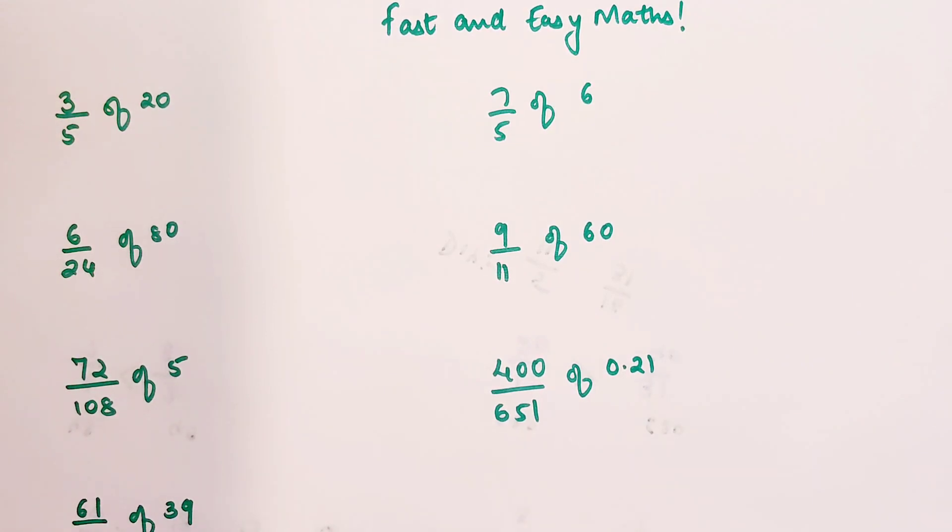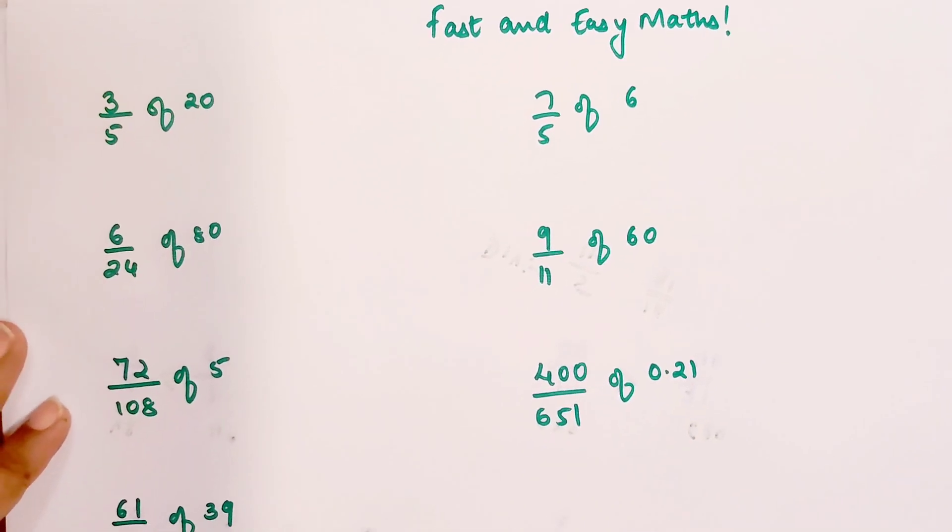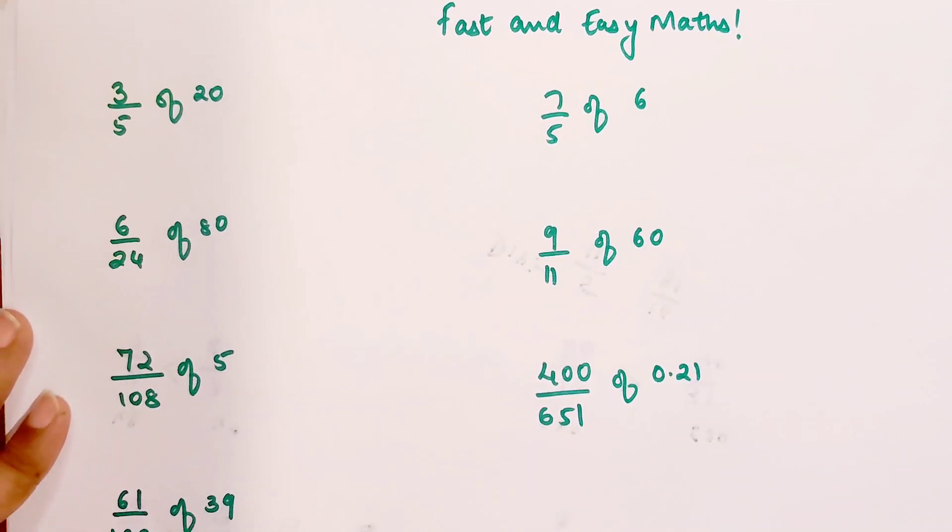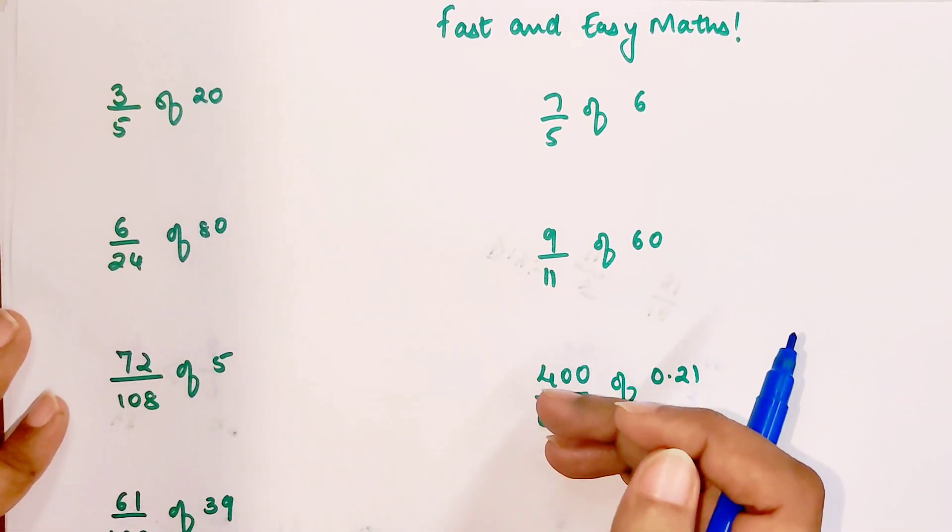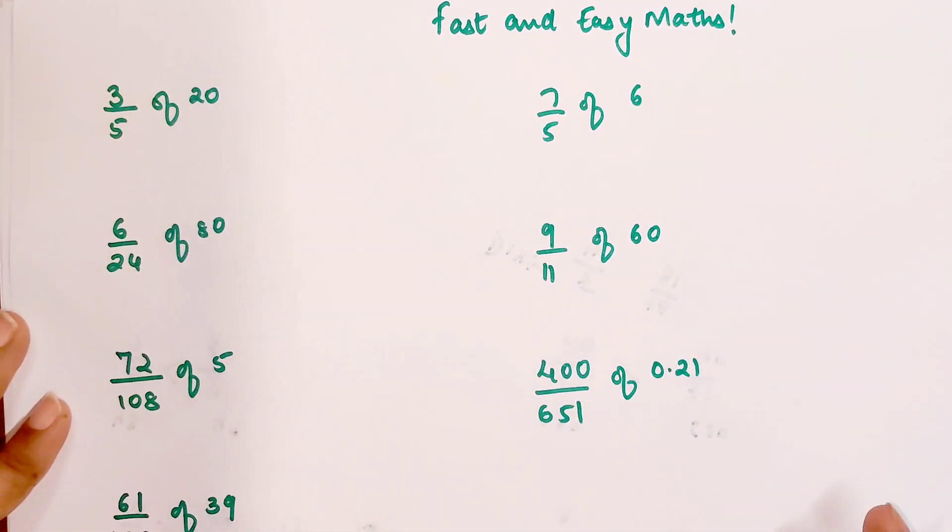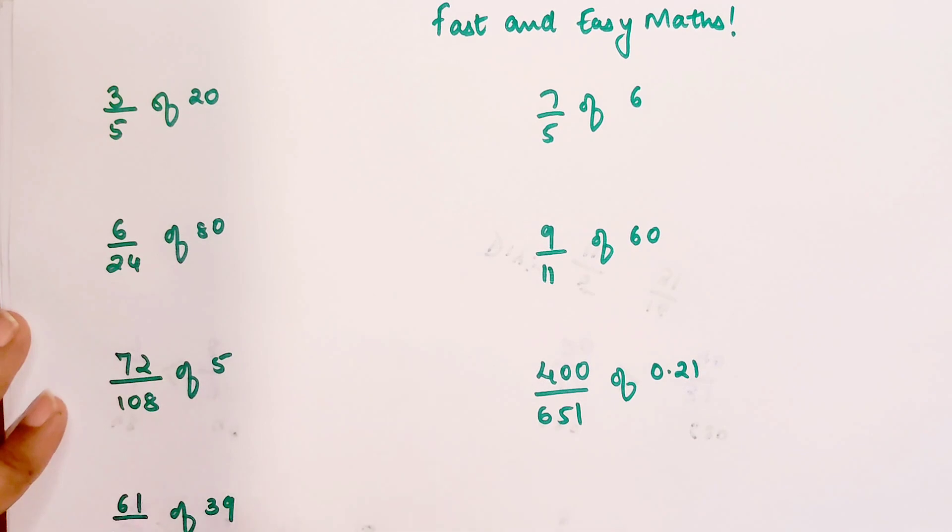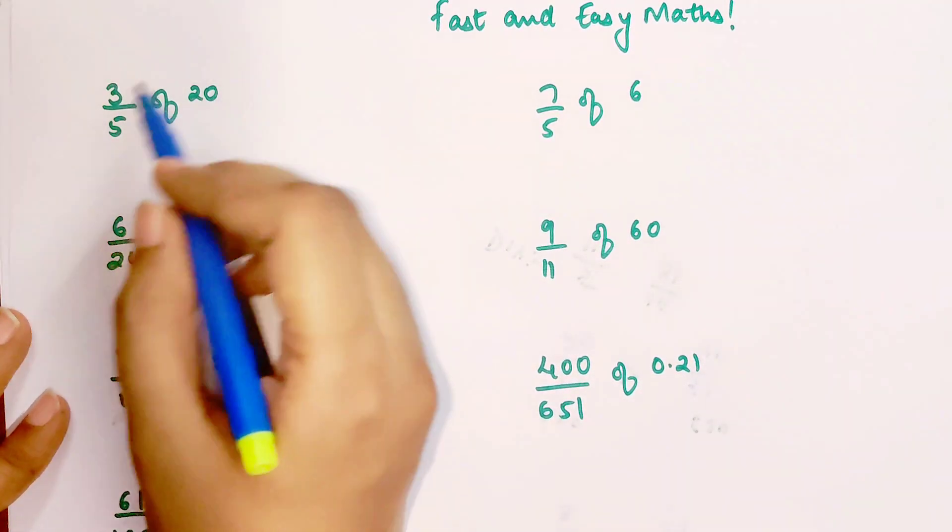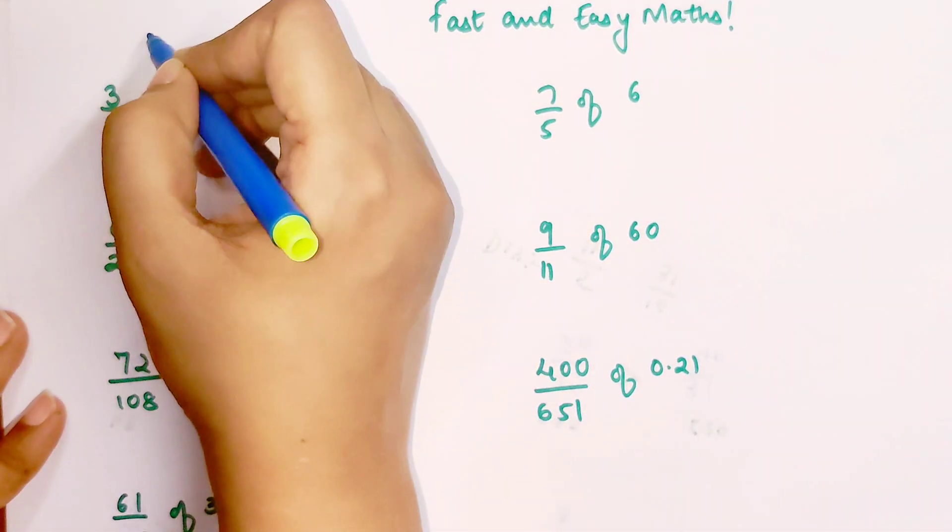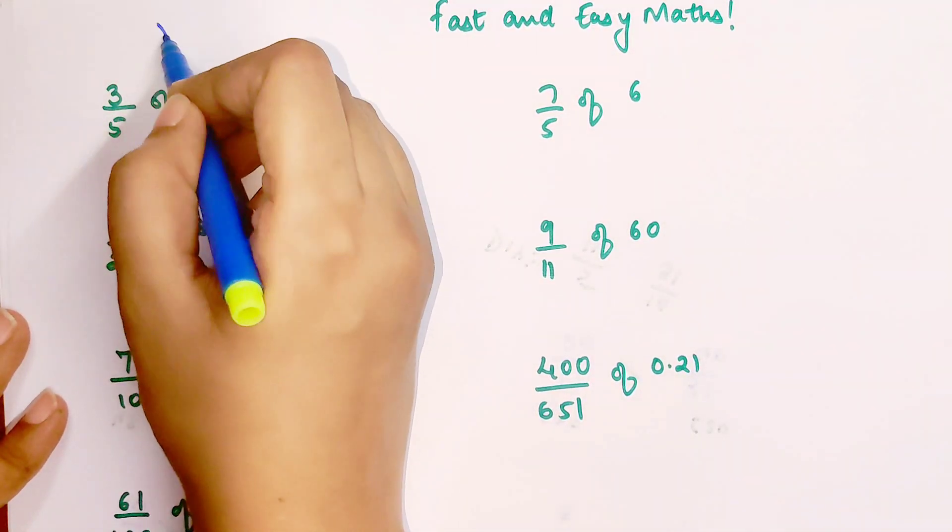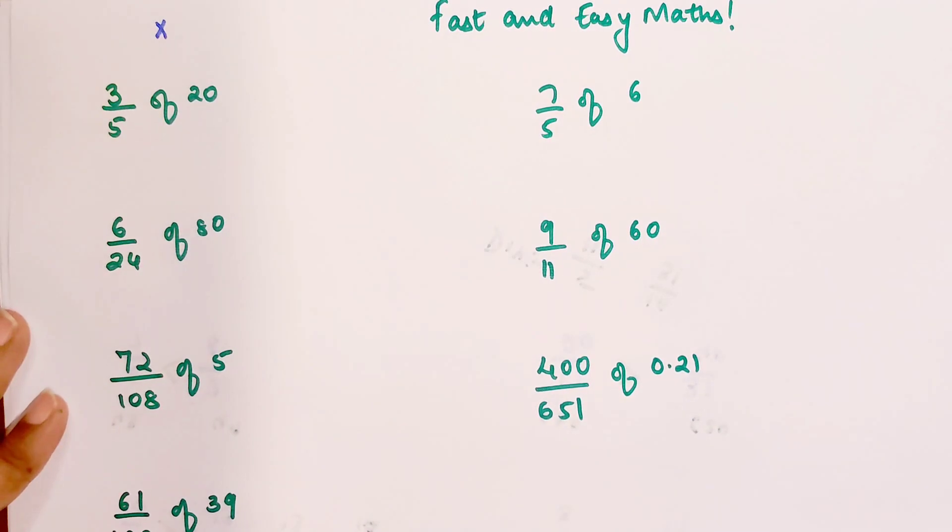Trust me, the trick here is really very simple and a lot of you keep missing out on something very simple. Just pay attention to a few sums and you'll know how quickly you can solve these kinds of problems. Whenever you have 'of' in mathematics, that means you simply have to multiply.